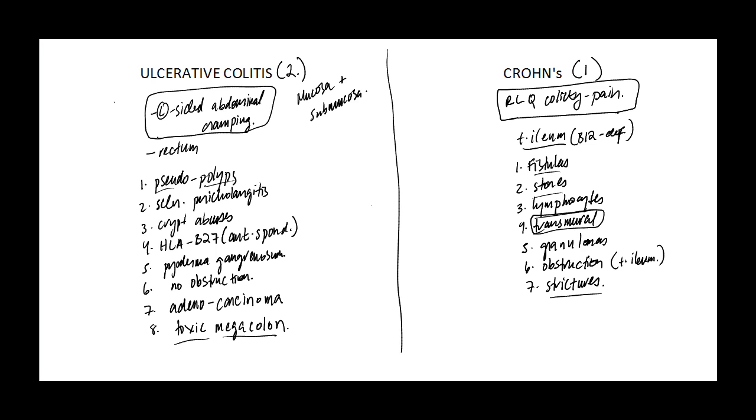Ulcerative Colitis primarily involves the mucosa and submucosa — two words. And Crohn's — one word — is transmural. Ulcerative Colitis is not going to have skip lesions. Here's pretty much Ulcerative Colitis versus Crohn's Disease in a nutshell, and this is going to get you every question they can throw at you. If you find anything else, feel free to drop me a message, and there's going to be more videos to follow.